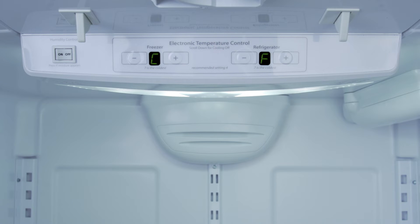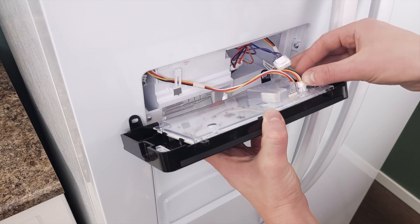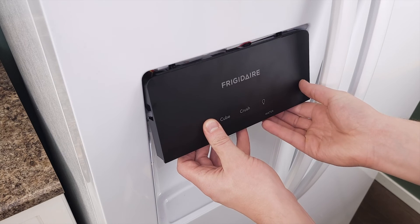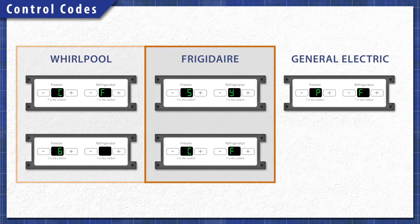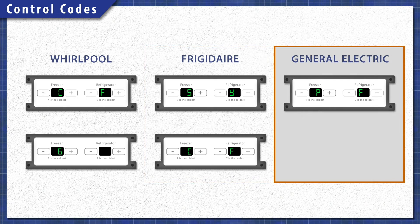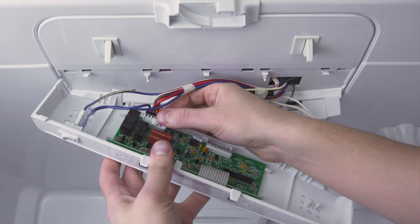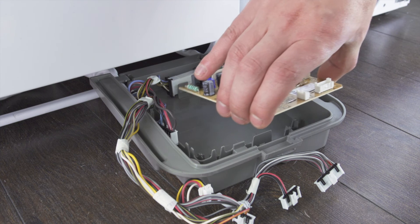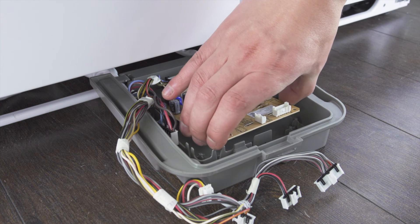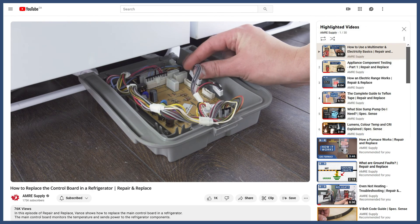Control error codes can show up when there's a problem with a control board or keypad. This can be caused by a faulty board or an issue with one of the connections. In Whirlpool models, this will likely be a CF or a 6 code. Frigidaire models might show SY or CF. General Electric models might display a PF code. Control boards can't be easily tested, but you can still check if the wire connections are secure. In many cases, it's best to install a new control board.